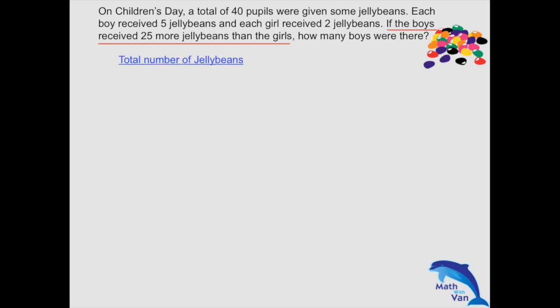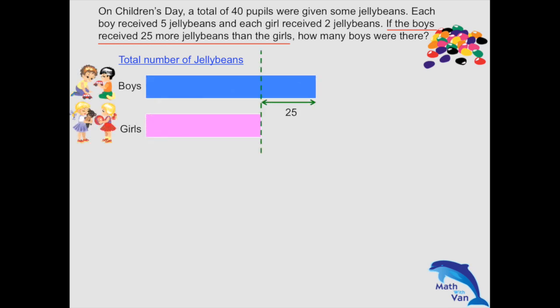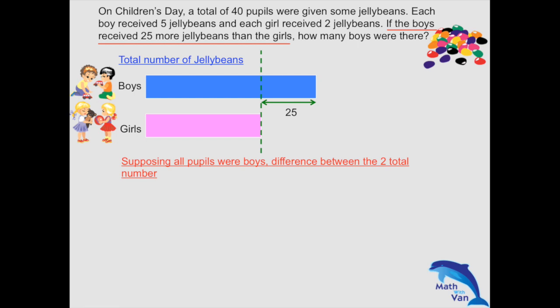So for the actual total number of jelly beans, the boys received 25 more than the girls. Usually we start off — since we're asked for how many girls there were — assuming all were girls. But for this case, for illustration and your understanding, I would like to start off on the same side as the question, that is the boys having more than the girls. So I'll start off assuming that all pupils would be boys.